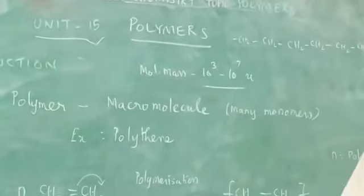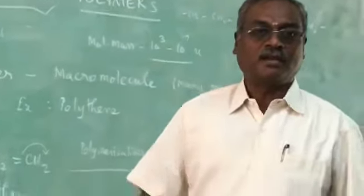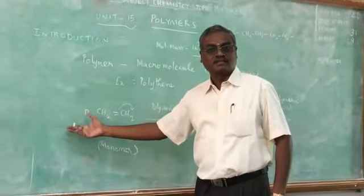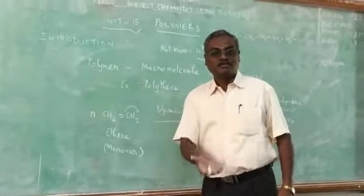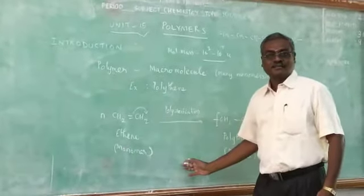Polymer is having high molecular mass. So do you understand the definition of a polymer? The polymer is made up of many monomers. How many monomers will be there? More than ten thousand unit. Simplest example is polythene.